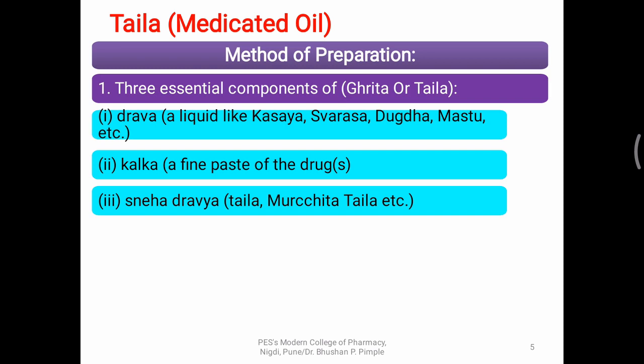The third component is Sneha, meaning the oil phase. Sesame oil or Murchita Taila is used. Murchita Taila means sesame oil treated with certain other crude drugs — the oil is boiled with the major components being turmeric and black pepper. Turmeric and black pepper ensure proper bioavailability of the active ingredients, helping the active ingredients pass through particular layers, especially the skin.